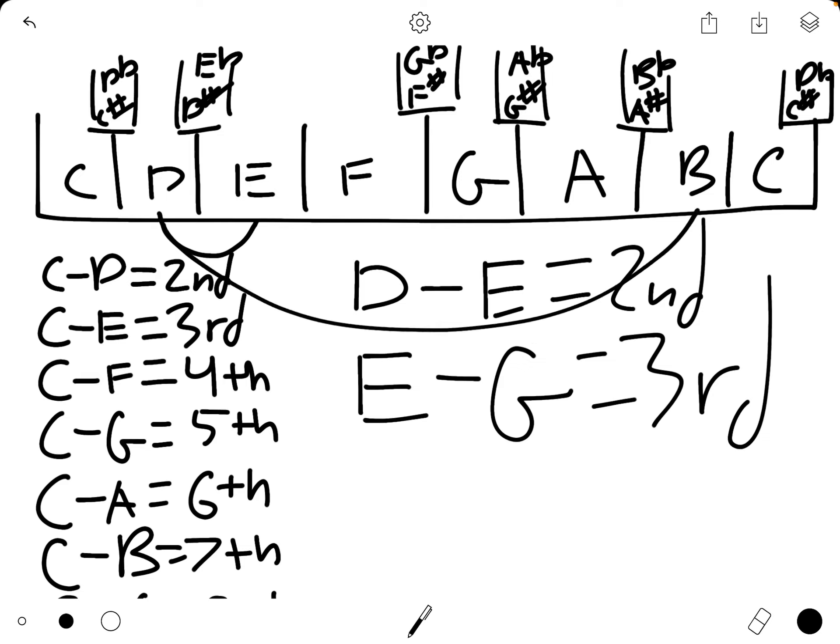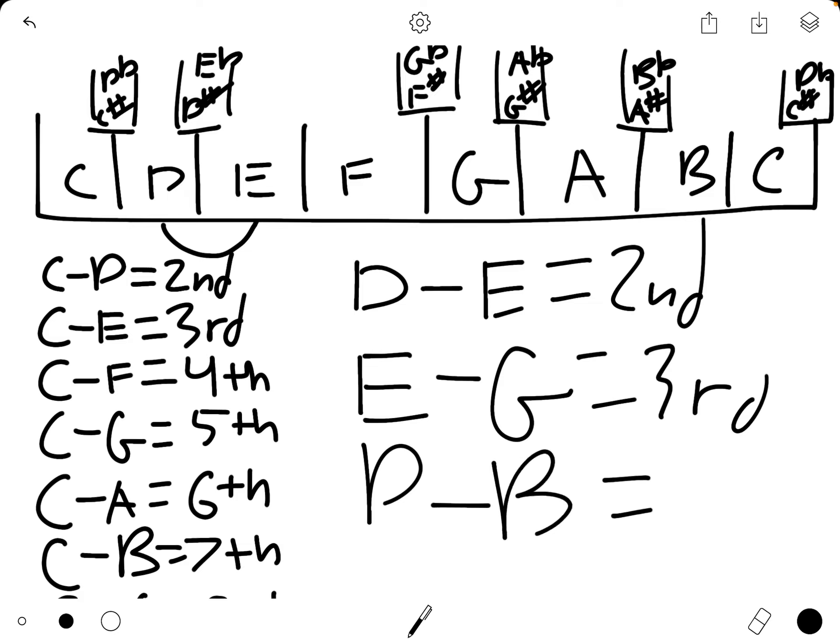And then let's do a harder one. What is D to B? So we can just count. We start with saying one on the D. One, two, three, four, five, six. So from D to B is a sixth.